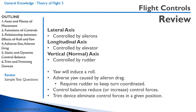Quick review of flight controls: The lateral axis is controlled by the ailerons. The longitudinal axis is controlled by the elevator. The vertical axis is controlled by the rudder. A yaw will induce a roll. Adverse yaw is caused by aileron drag and requires rudder to keep the turn coordinated. Control balances reduce control forces in certain circumstances. A trim device eliminates control forces in a given position.